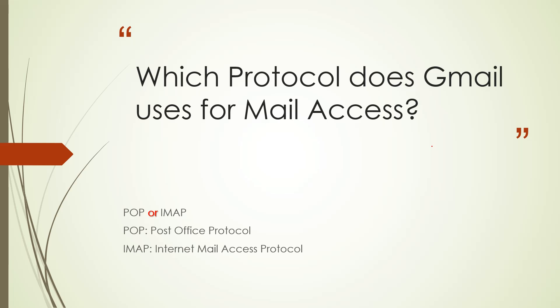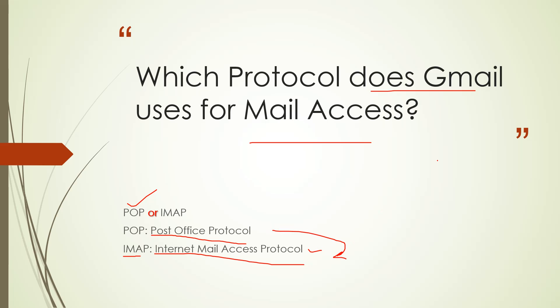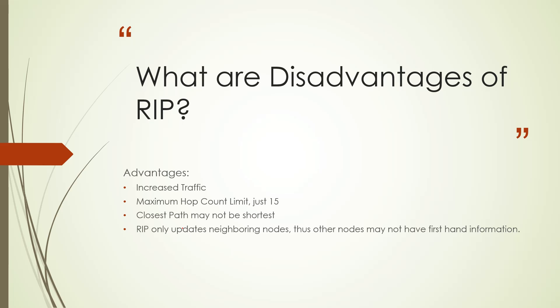The last question of this video: which protocol does Gmail use for mail access? There are two protocols which can be used by Gmail. Sometimes it uses POP, which stands for Post Office Protocol, and it also uses IMAP, which stands for Internet Mail Access Protocol. Post Office Protocol is the simplest of all mail access protocols, and IMAP is more of a derived one from POP. Gmail can access both of these at one time. In the next video, we will start with the disadvantages of ARP.